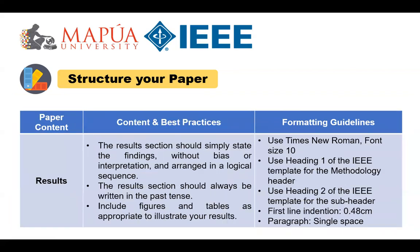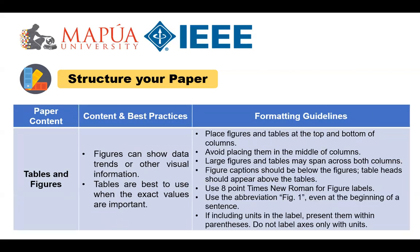For the results, make sure you include details about your data analysis and interpretation. You should also include statistical significance tests as part of your results. Report the statistically significant research findings for your academic article's credibility. Use the past tense when describing your research results. Figures can show data trends or other visual information, while tables are best used when the exact values are important.